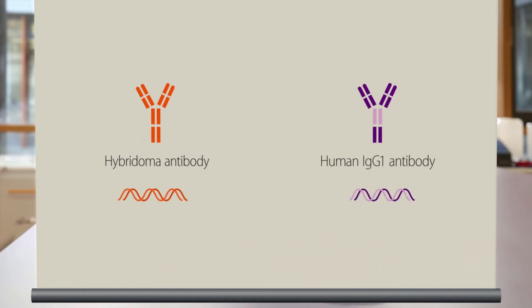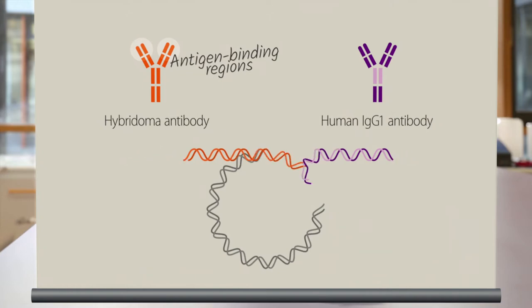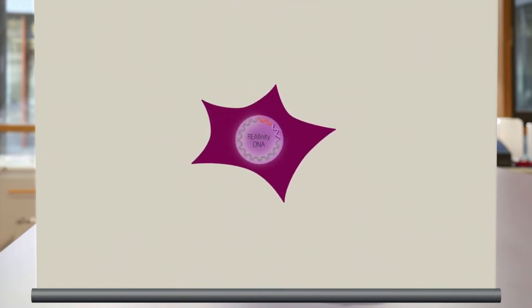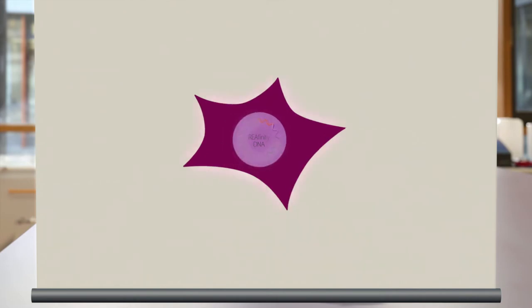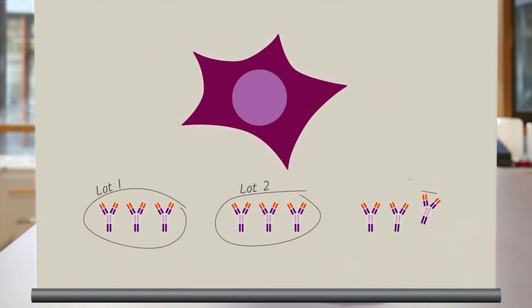So, how does that work exactly? First, we clone the genetic sequence of antigen-binding regions from traditional hybridoma-derived antibodies with a human IgG1 sequence. Then, the reaffinity DNA is expressed in a mammalian cell line under standardized conditions, and by this high lot-to-lot consistency can be assured.